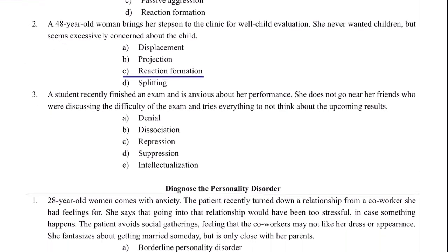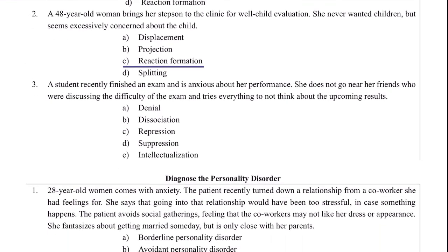Case: a student recently finished an exam and is anxious about her performance. She does not go near friends discussing the difficulty of the exam and tries everything to not think about the upcoming results. This is typical suppression — you are suppressing the feelings and memories about the exam by avoiding thinking about it or doing everything else possible.